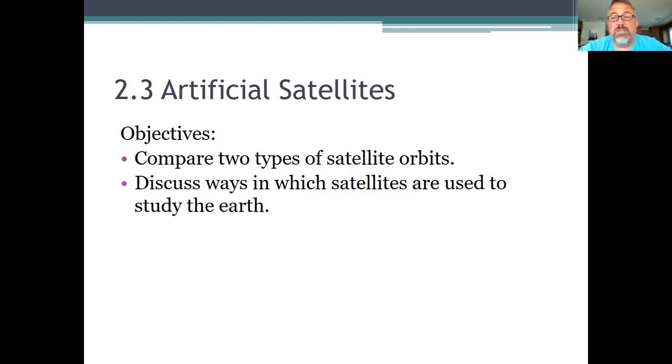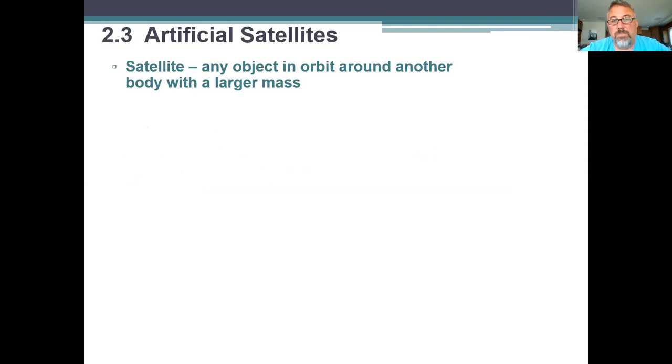So we're going to compare two types of satellites and we're going to discuss how they're used. Let's get started. Okay, so a satellite: any object that goes around another object. So if it's in orbit to an object that has more mass, then it's a satellite.